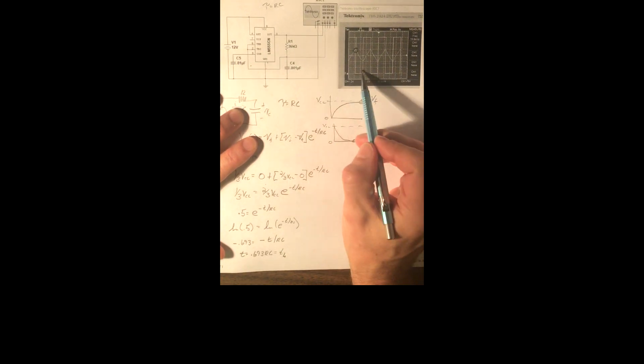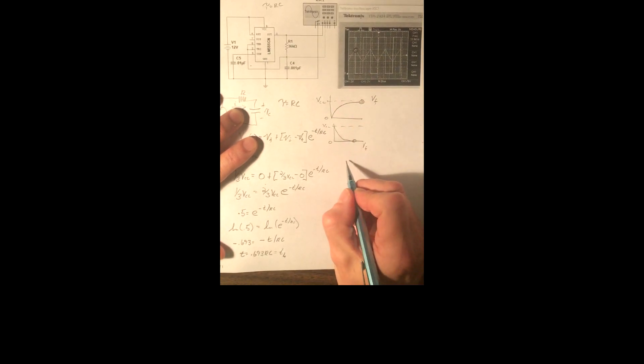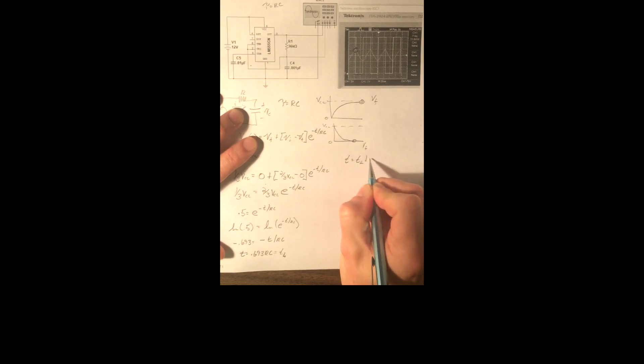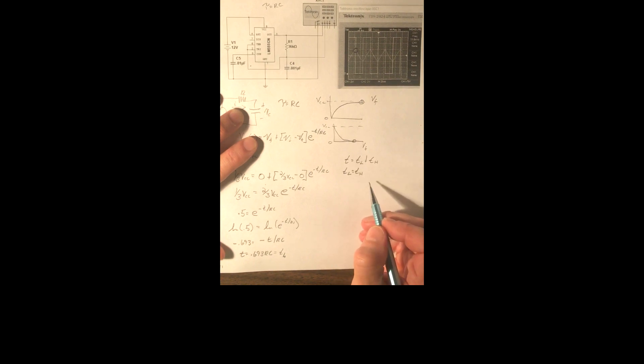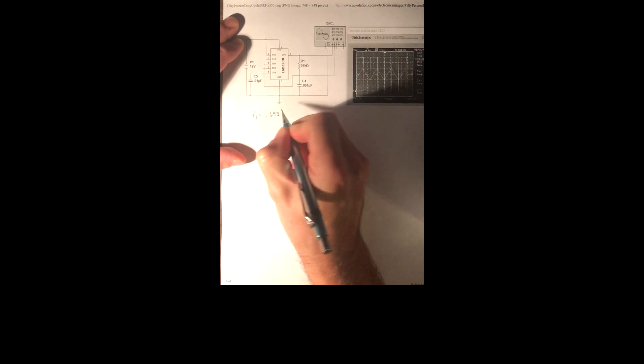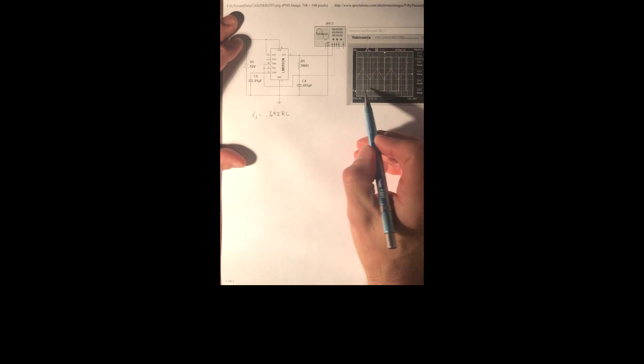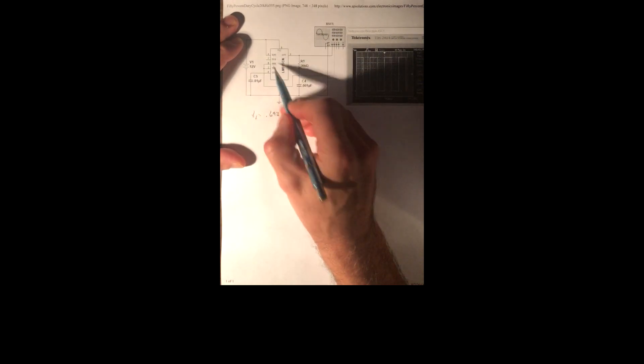If t sub L is the time period that the output is low, and t sub H is the time period that the output is high, then our total time period is t sub L plus t sub H. By definition, if t sub L equals t sub H — it's high 50% of the time and low 50% of the time — then that gives us our 50% duty cycle. So what we want to show with this circuit is that t sub L equals t sub H. From our previous work, t sub L equals 0.693 RC.